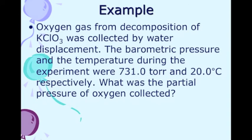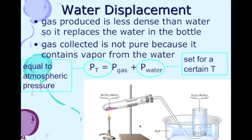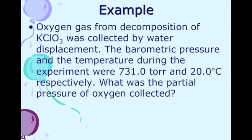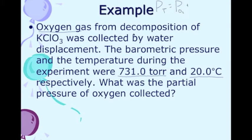Here's our example. We're doing this exact experiment — collecting the oxygen gas that comes off the decomposition of potassium chlorate (the manganese dioxide is just a catalyst). This was the 'screaming gummy bear' reaction. The gas is collected by water displacement. The barometric pressure and temperature during the experiment were 731 torr and 20°C. What was the partial pressure of the oxygen collected? Using our formula: P_total = P_O2 + P_H2O. We know P_total is 731 torr, and P_O2 is our unknown X.